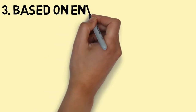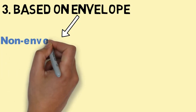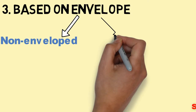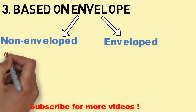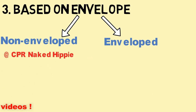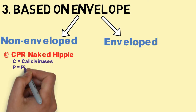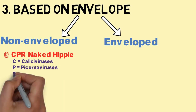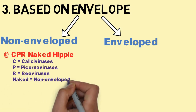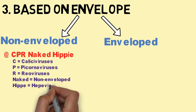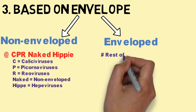Based on envelope, RNA viruses are either non-enveloped or enveloped. The mnemonic for non-enveloped RNA viruses is 'CPR Naked Hippie,' where C is for Caliciviruses, P is for Picornaviruses, R is for Reoviruses — these are the naked (non-enveloped) RNA viruses — and Hippie is for Hepeviruses. The rest of the RNA viruses are enveloped.